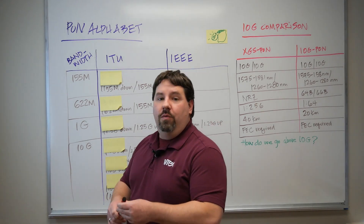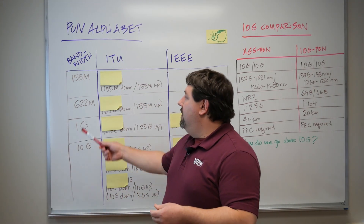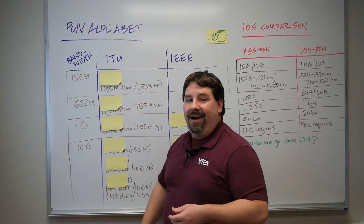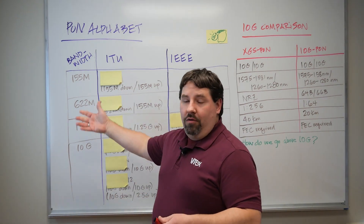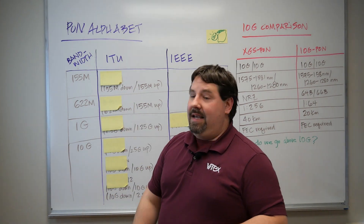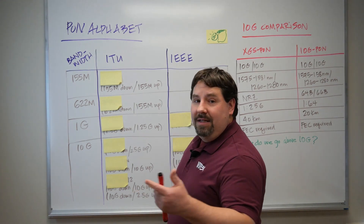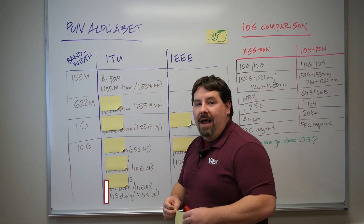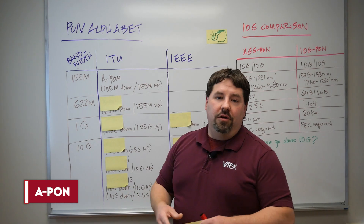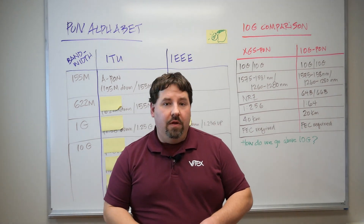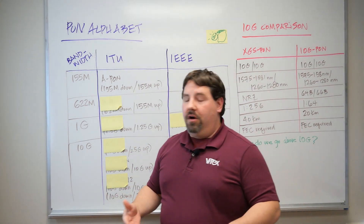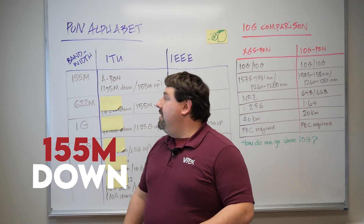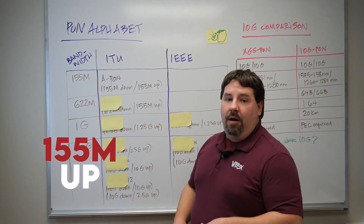To give a brief history: when we started, we had much slower bandwidths — down to 155 Mbps — and as time goes on we get larger bandwidths, up to 10 gig now. When we first started, we were at A-PON, which is an ATM PON. This was the first iteration of PON, and it had 155 Mbps down and 155 Mbps up.